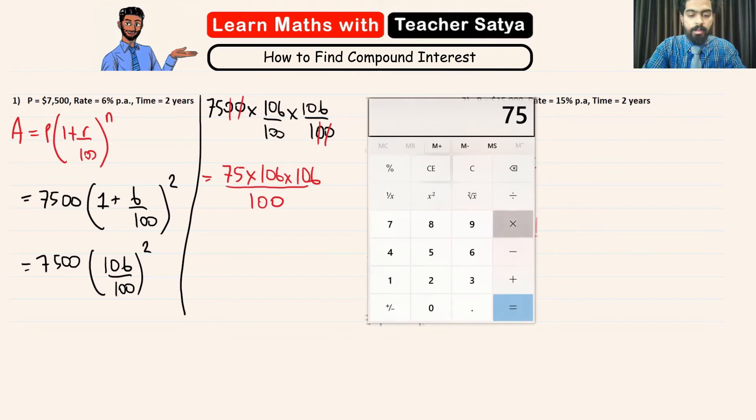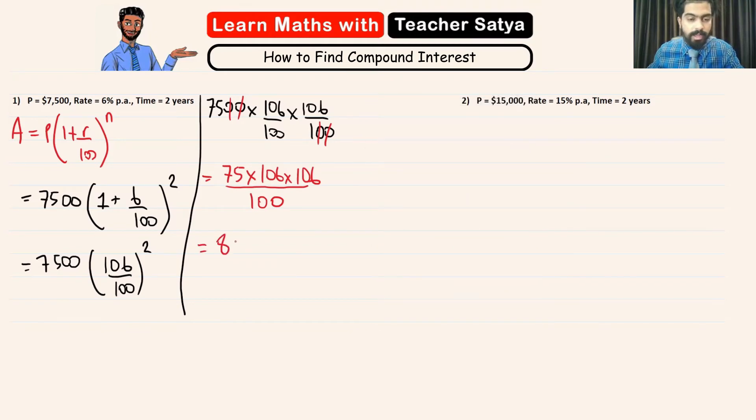Now, let's go ahead and solve this question. So, we have 75 times 106 times 106. And this, we have 842700 divided by 100, which is equal to 8427. As these two zeros can simplify each other. Now, we have found the amount.